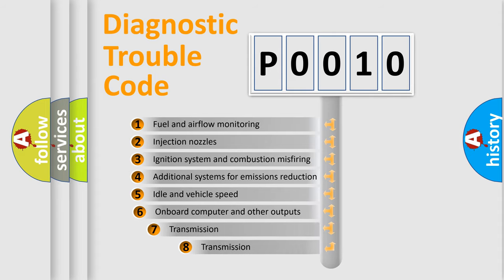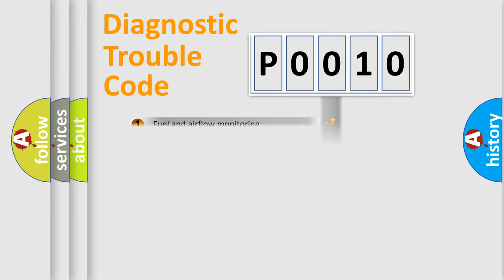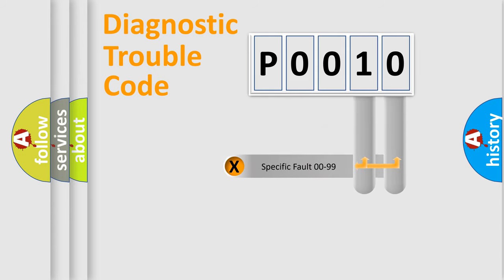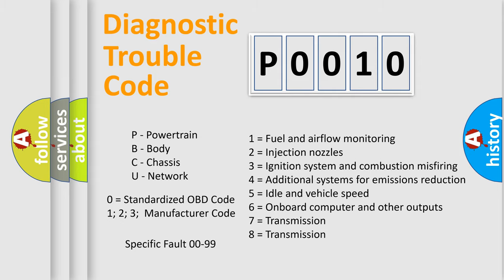The third character specifies a subset of errors. The distribution shown is valid only for the standardized DTC code. Only the last two characters define the specific fault of the group. Let's not forget that such a division is valid only if the second character code is expressed by the number zero.